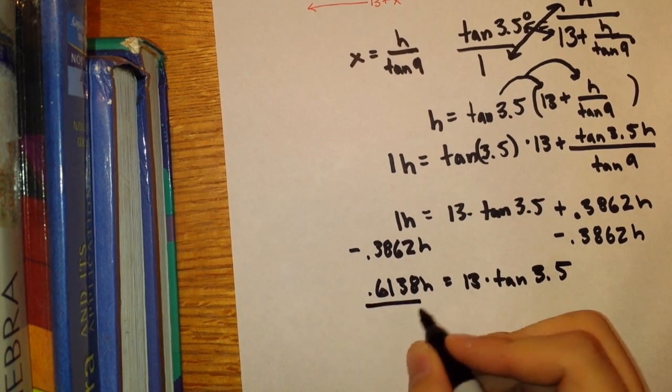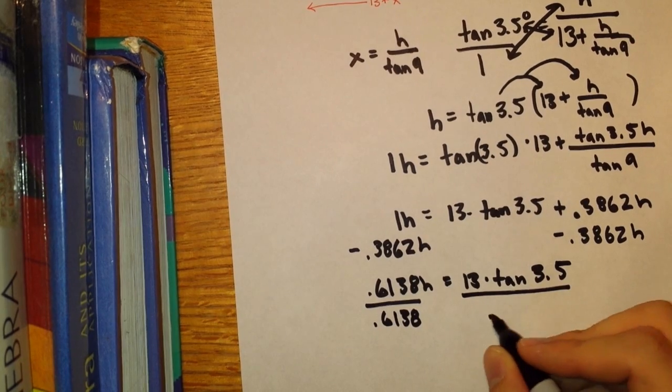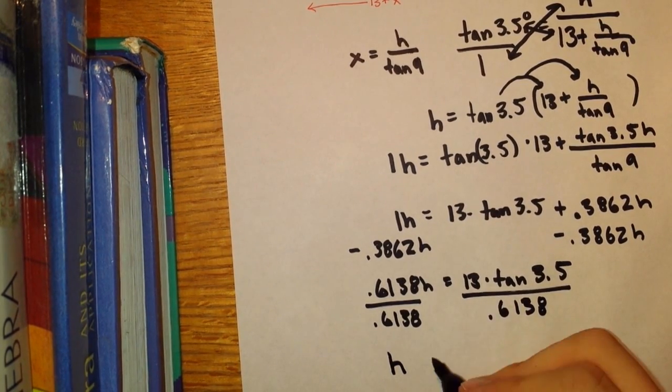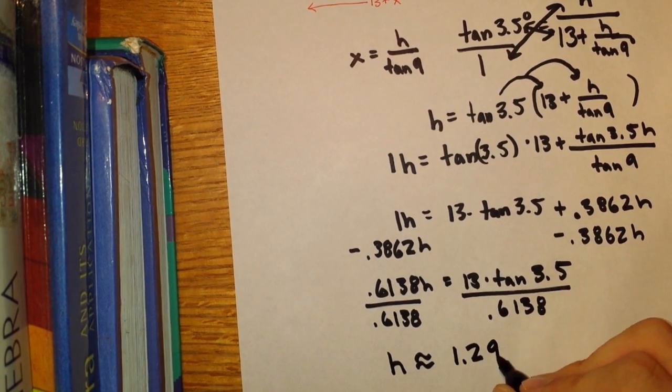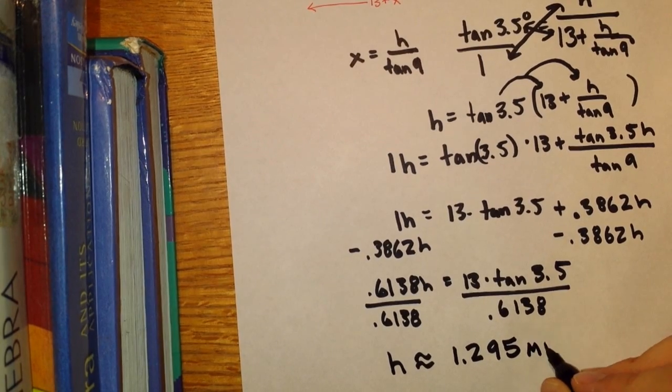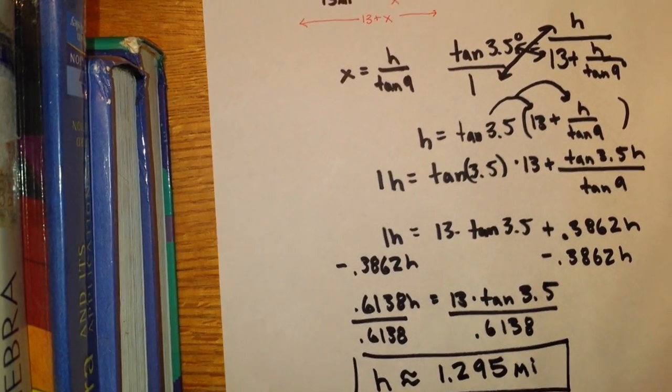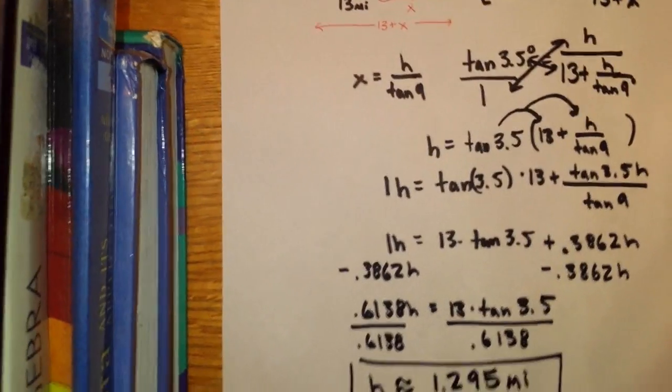To solve for h, divide both sides by 0.6138. And the height of the mountain is approximately equal to 1.295 miles.